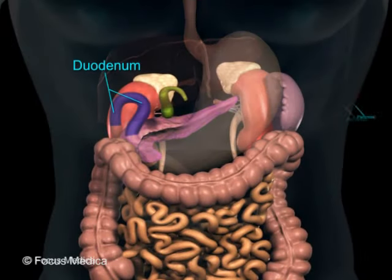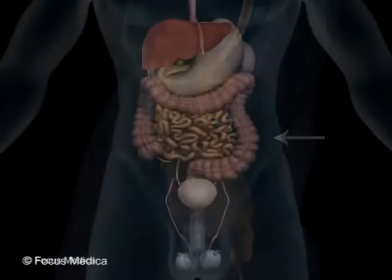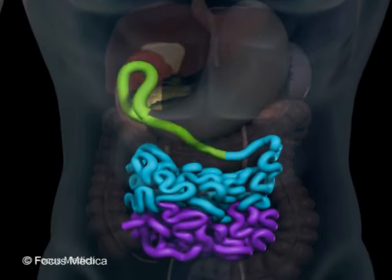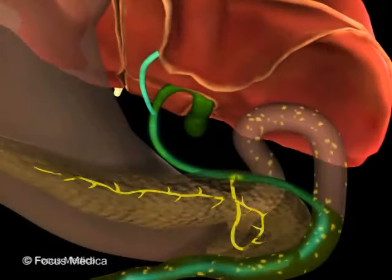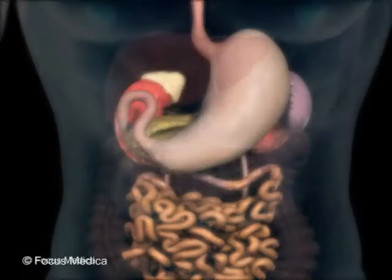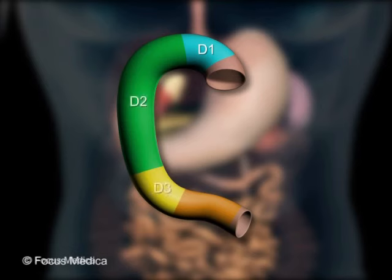The duodenum and the pancreas are two closely related organs present in the retroperitoneal area of the posterior abdominal wall. The duodenum is a C-shaped tube with the head of the pancreas lying in its concavity. It is the first part of the small intestine in which pancreatic juice and bile digest the chyme coming from the stomach. The duodenum is divided into four parts: D1, D2, D3, and D4.